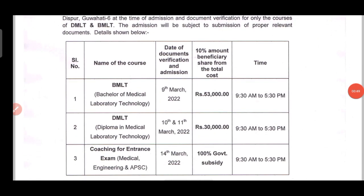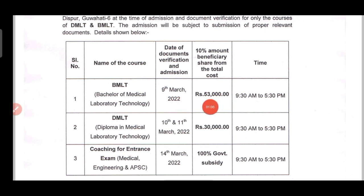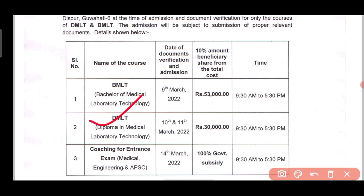The second document is the DMLT — Bachelor of Medical Laboratory Technology — and the cost is ₹53,000. For the DMLT, the document submission, verification and admission is on 10-11 March, costing ₹30,000.